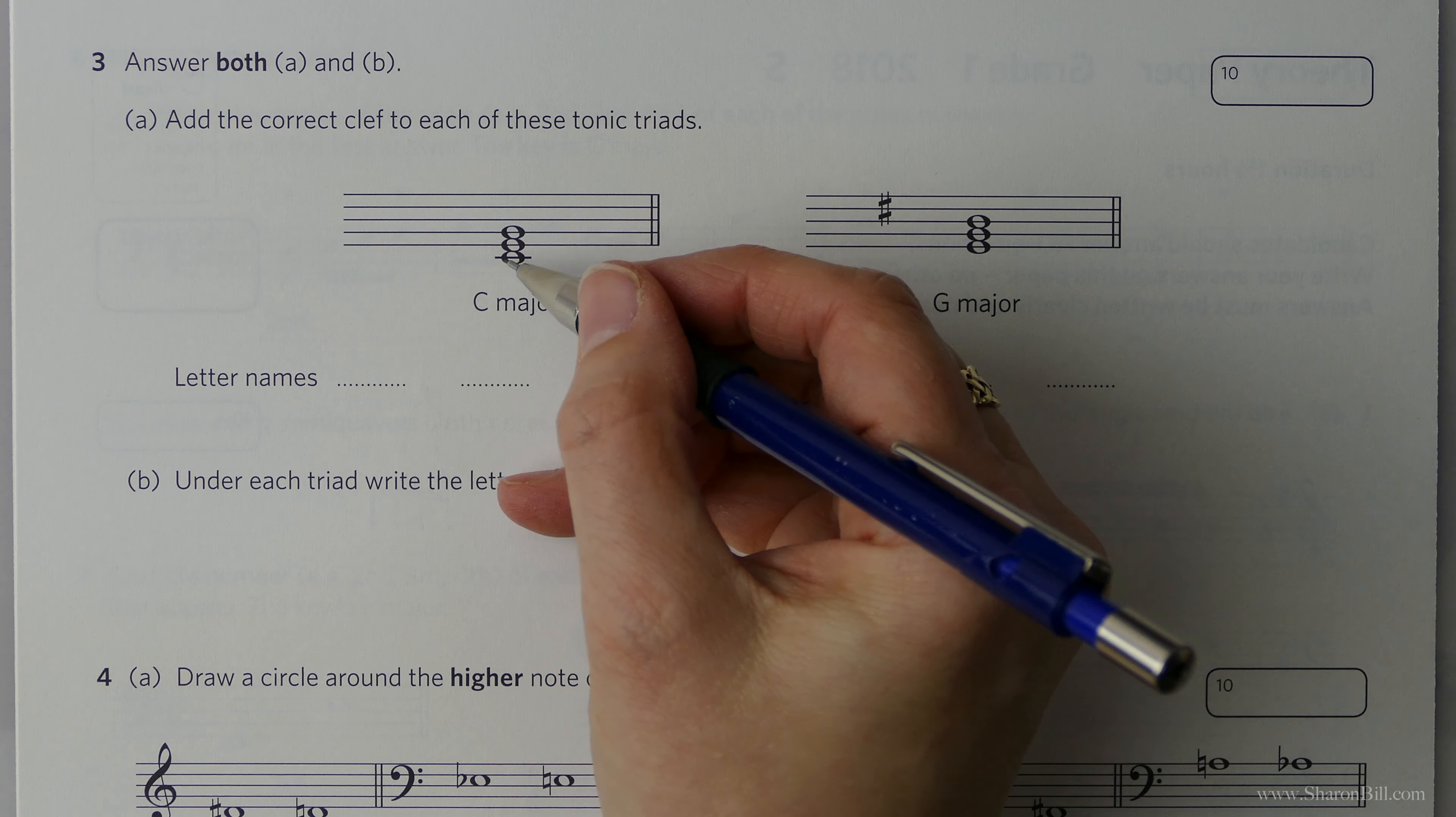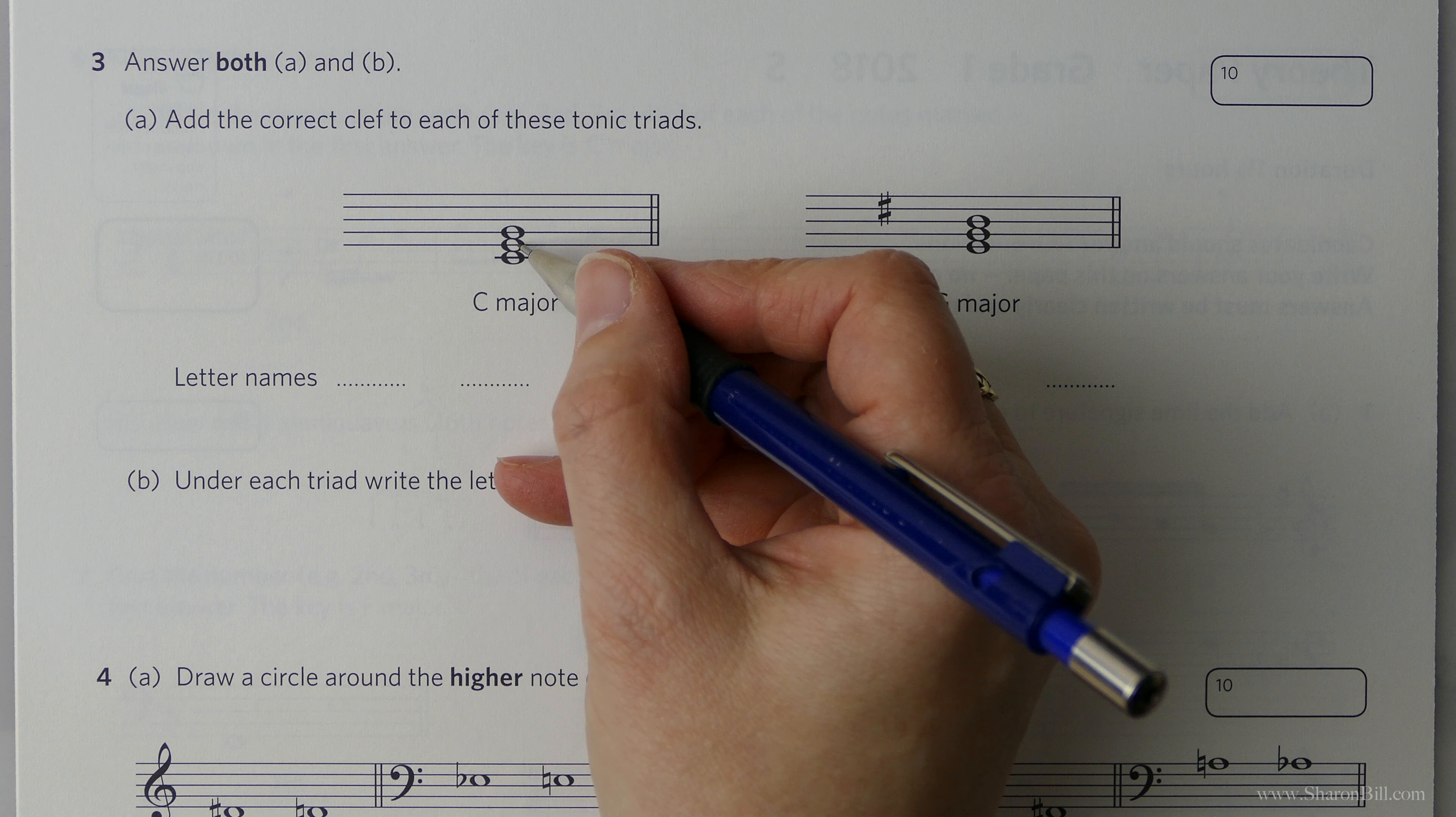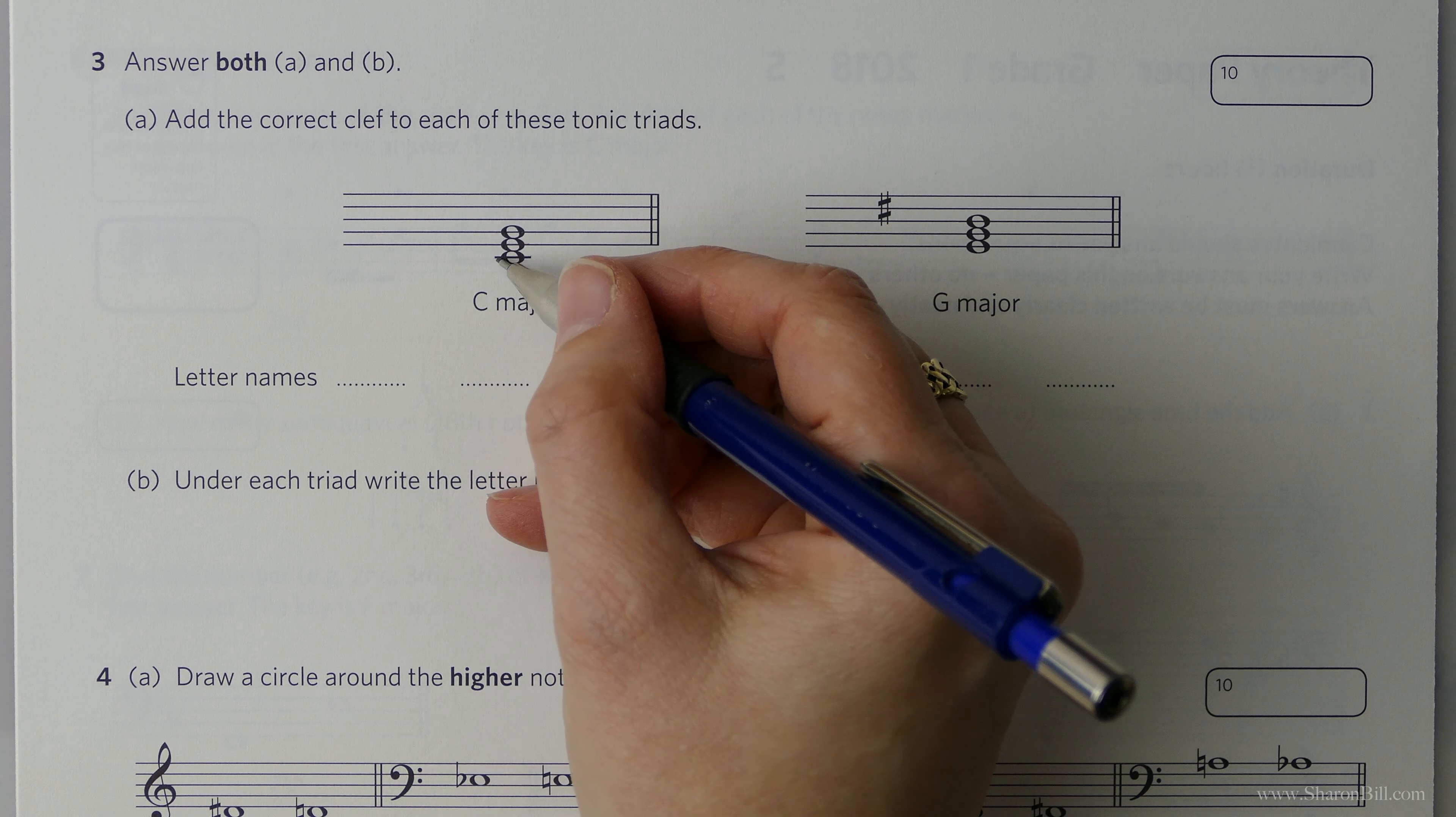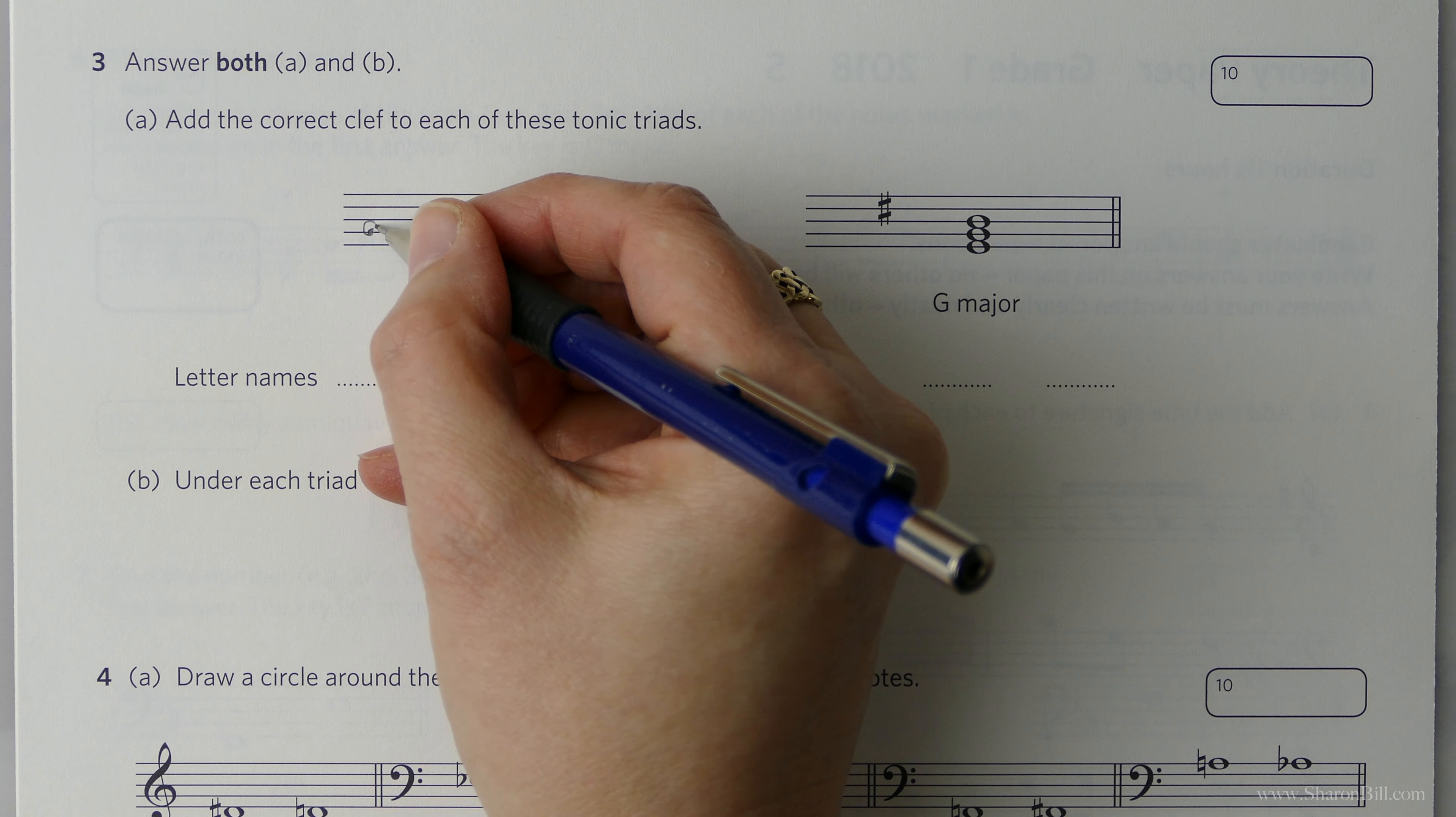So then of course C major, the bottom note, the tonic, the key note must be C. And for that to be the case, it must be treble clef and the tonic triad is the first, the third and the fifth. So it should be C, E, G, which it is. And so C major, the tonic must be in treble clef. So there we go.